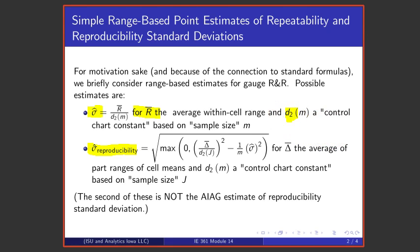Control chart constants little d2 depend upon the number of values that are used to make the range. And since we're making ranges within a cell, the number of measurements within a part operator combination we've declared to be little m.